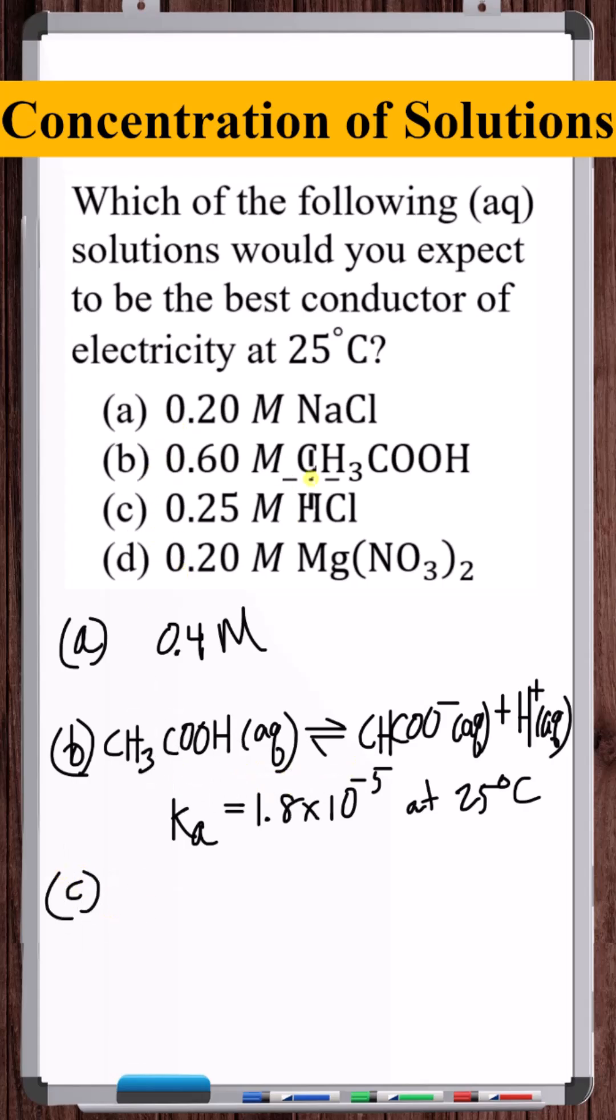Okay, C, hydrochloric acid is a strong acid, so every mole of hydrochloric acid is going to disassociate. But once the disassociation takes place, we're going to end up with double the moles of particles, which will be ions. So 0.25 times 2, we're going to have a 0.5 molarity ion concentration in solution C.